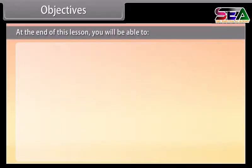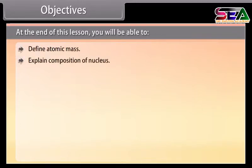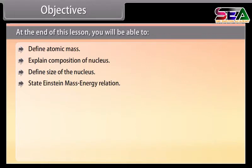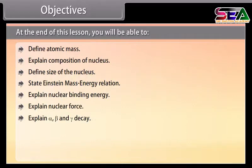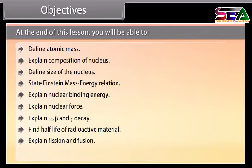At the end of this lesson, you will be able to: define atomic mass, explain the composition of the nucleus, define the size of the nucleus, state Einstein's mass-energy relation, explain nuclear binding energy, explain nuclear force, explain alpha, beta, and gamma decay, find the half-life of radioactive material, explain fission and fusion, and explain the nuclear reactor.